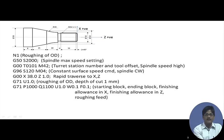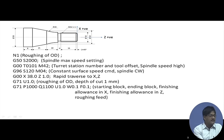The roughing cycle G71 is executed, with line numbers defining the profile range. Cut after cut is taken at 1 millimeter depth of cut, removing material from the outer diameter down to the final diameter. Finishing allowance U is 1 millimeter along X (diameter) and 0.1 millimeter along Z, with feed of 0.1 millimeters per revolution.